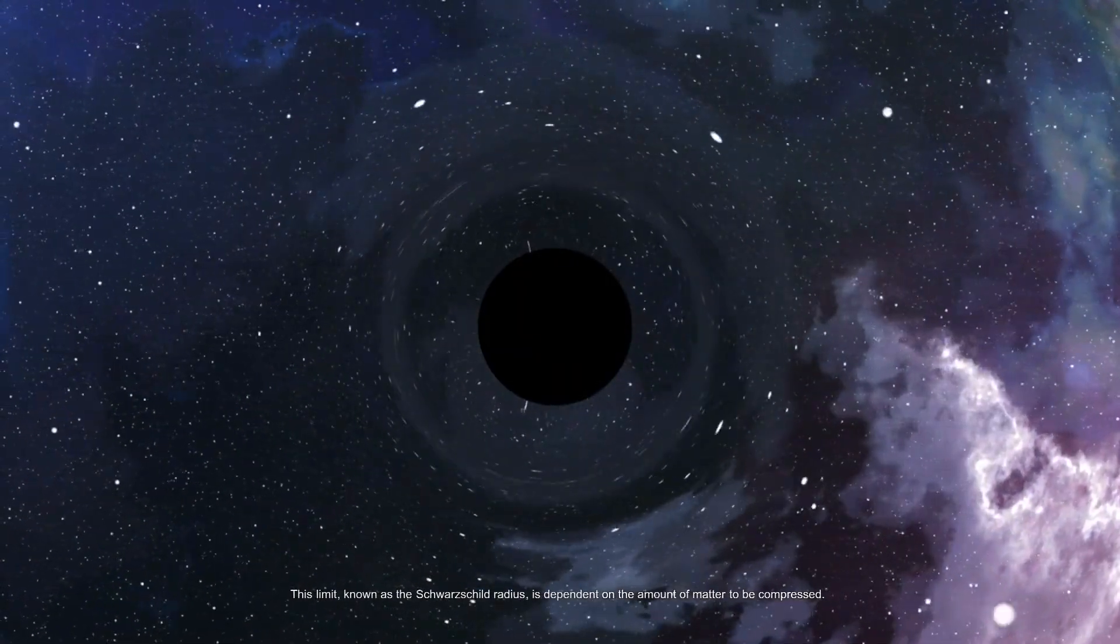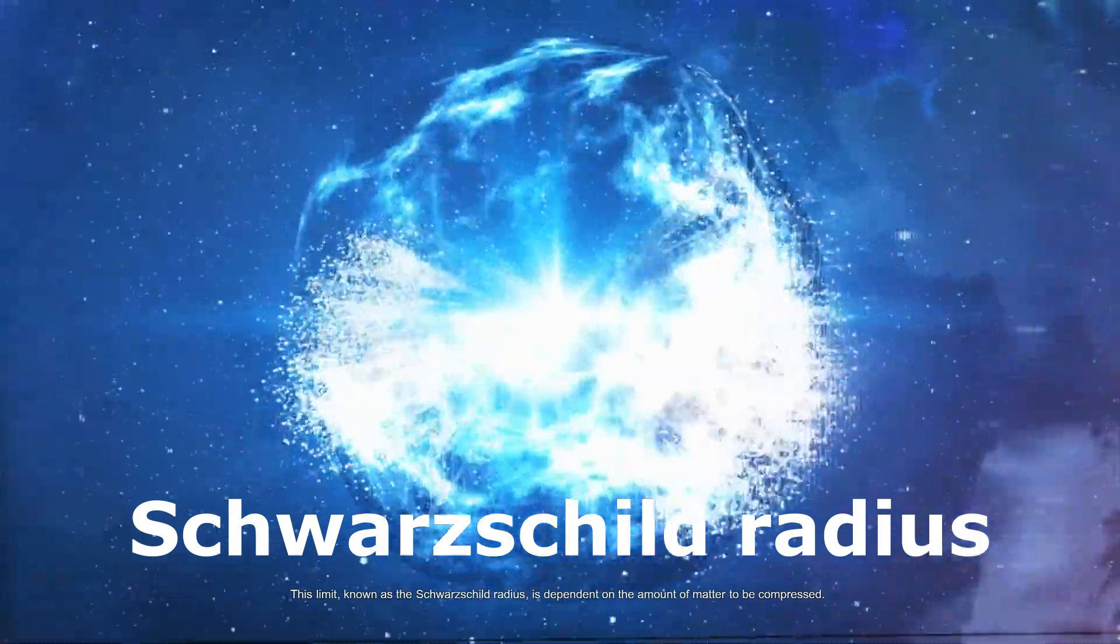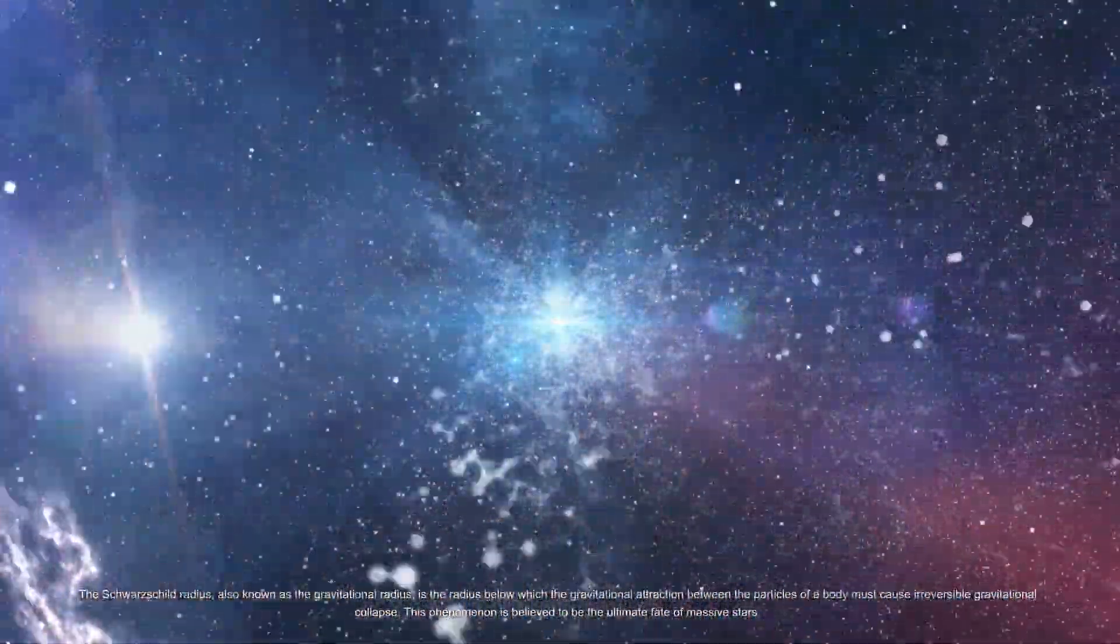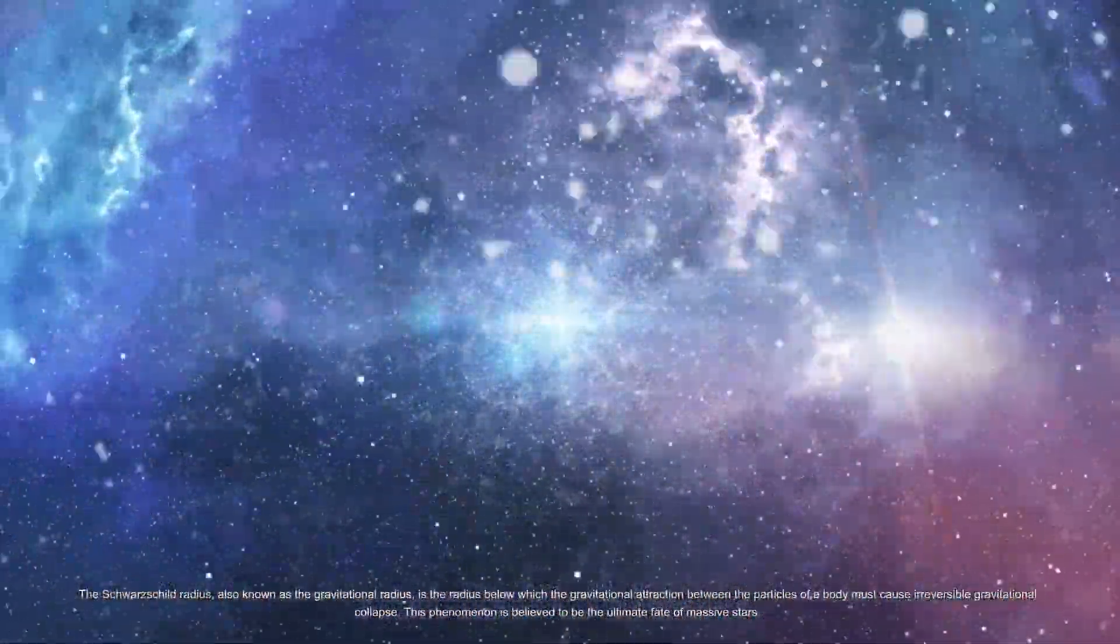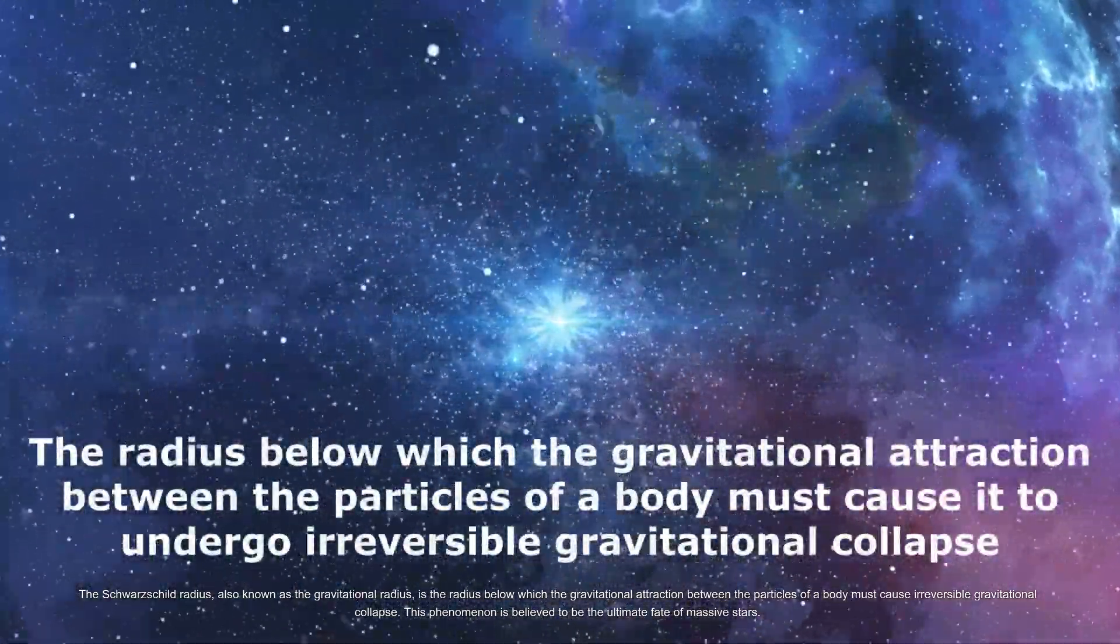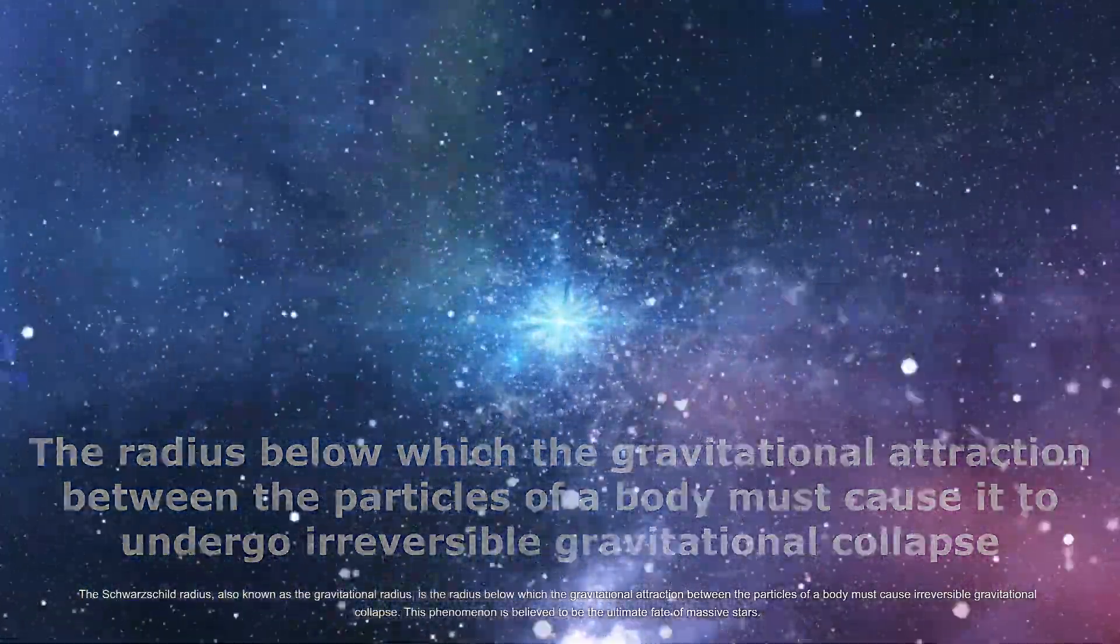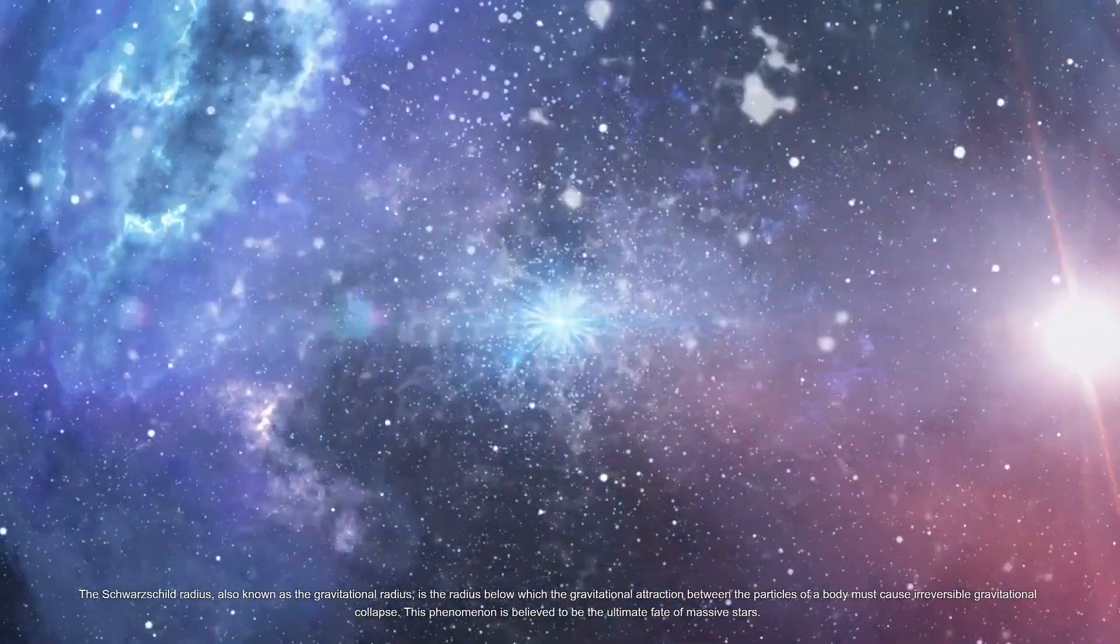This limit, known as the Schwarzschild radius, is dependent on the amount of matter to be compressed. The Schwarzschild radius, also known as the gravitational radius, is the radius below which the gravitational attraction between the particles of a body must cause irreversible gravitational collapse. This phenomenon is believed to be the ultimate fate of massive stars.